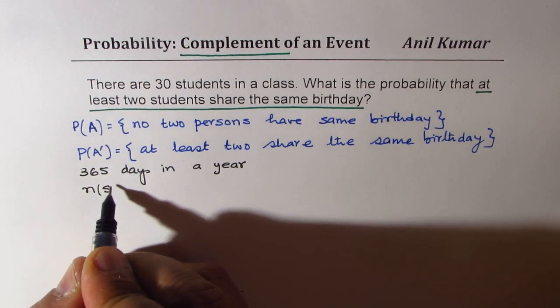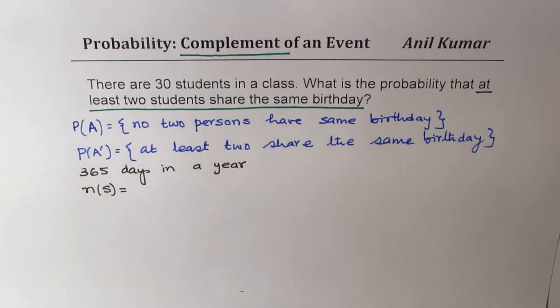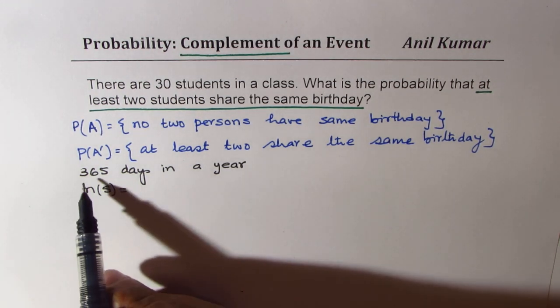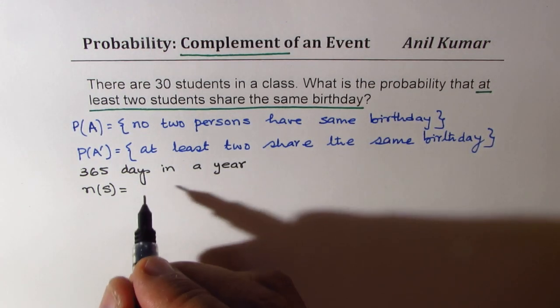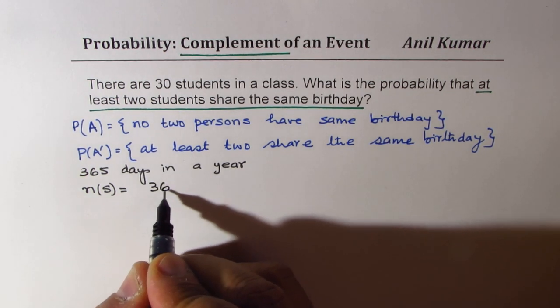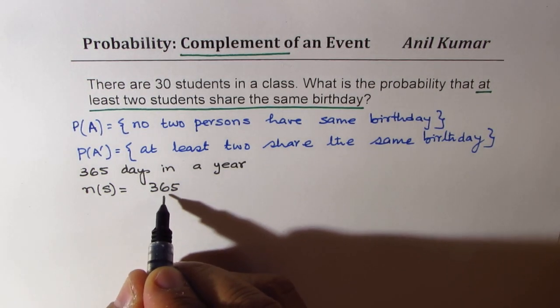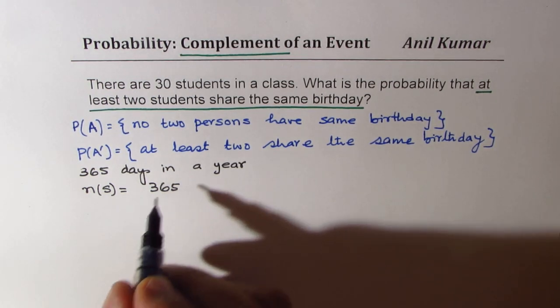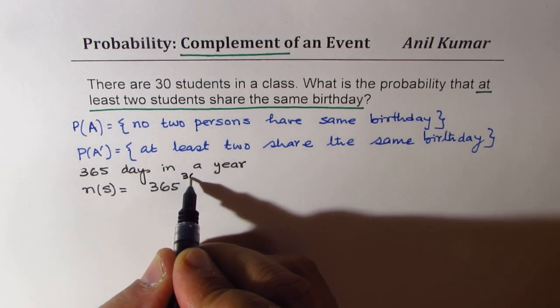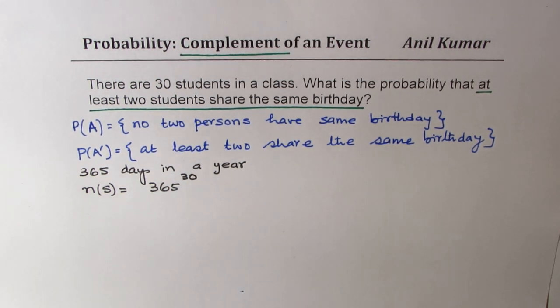So the sample space for us is that each of these 30 students could select any one of these 365 days. So we have 365 days can be selected by the first student. Second also has choice of all 365 days. So in the sample space, it is 365 to the power of 30. So that becomes the sample space.